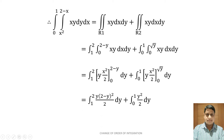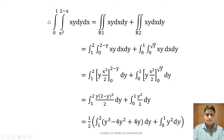Therefore: integral from 1 to 2 of y · (2−y)²/2 dy plus integral from 0 to 1 of y · (√y)²/2 dy, which simplifies to y · y/2 = y²/2. Taking 1/2 outside as a constant factor using the property of integration: 1/2 · integral from 1 to 2 of y · (2−y)² dy plus 1/2 · integral from 0 to 1 of y² dy. Expanding y(2−y)² gives y³ − 4y² + 4y.